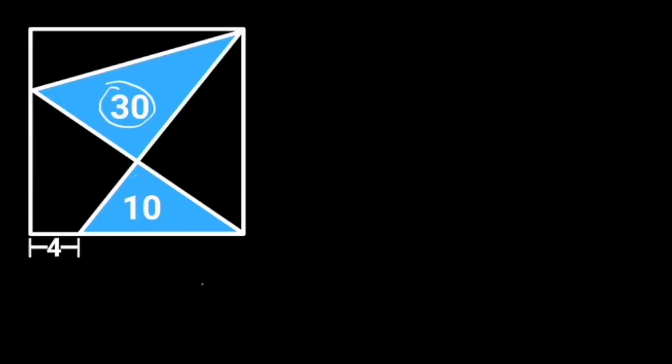This figure is a square with two shaded triangles of area 30 square units and 10 square units inscribed in it. If this length is 4 units, find the area of the square.